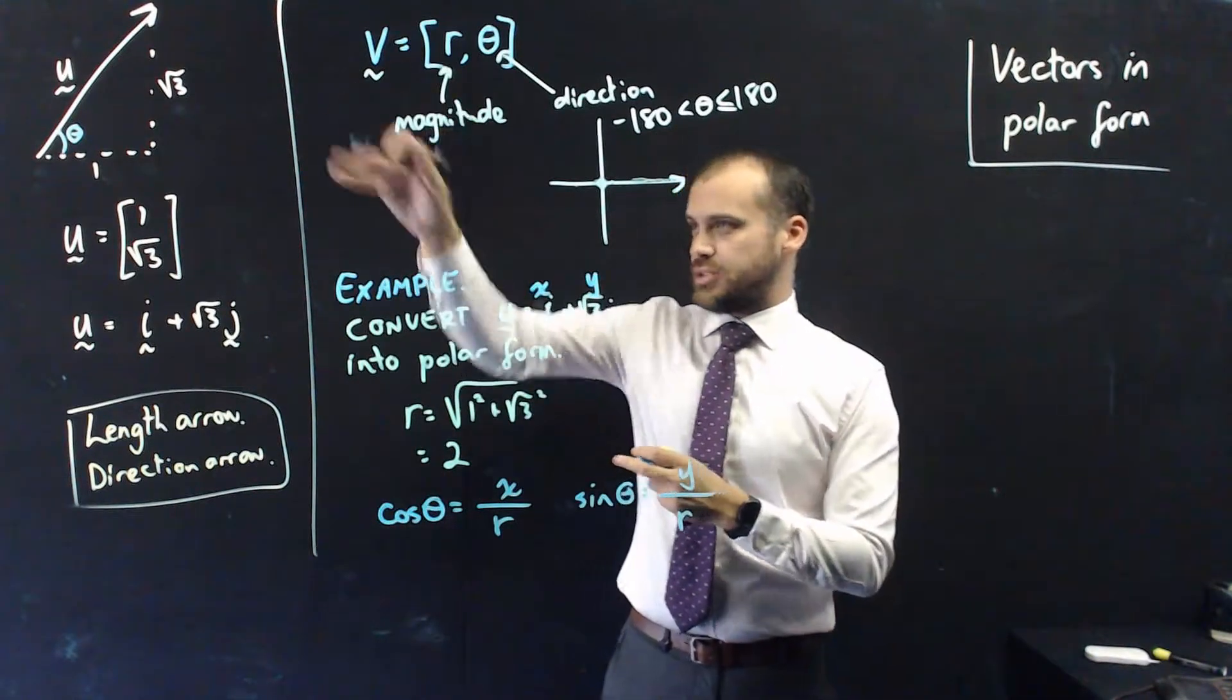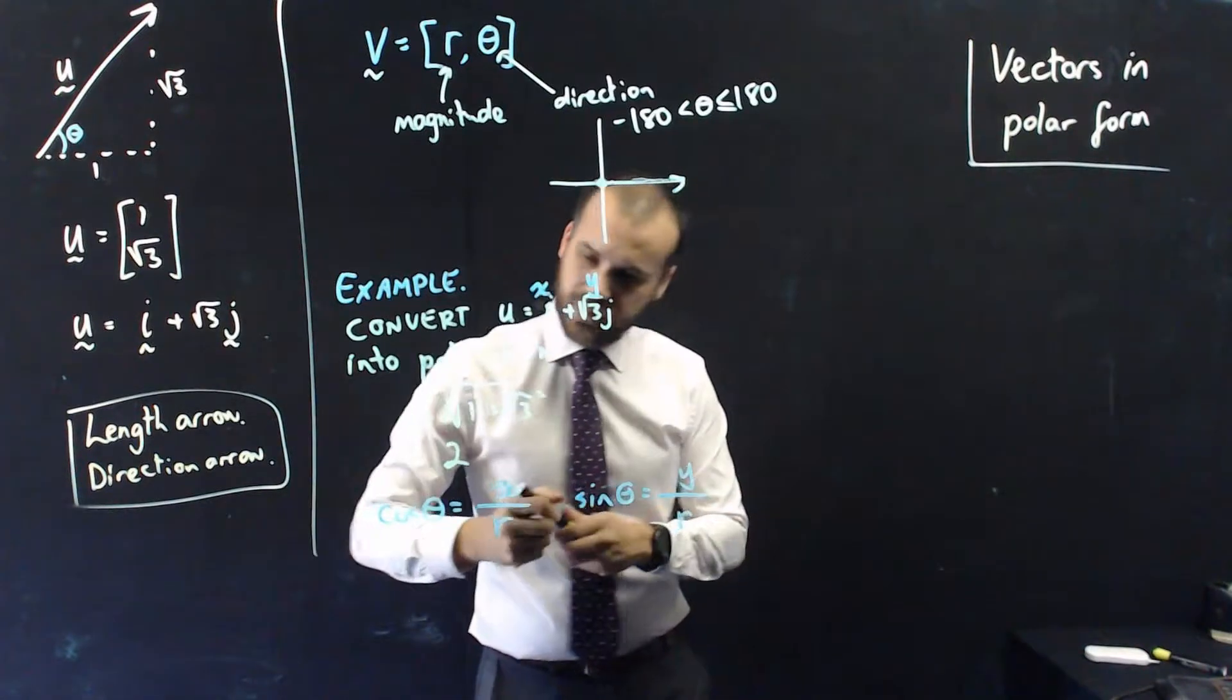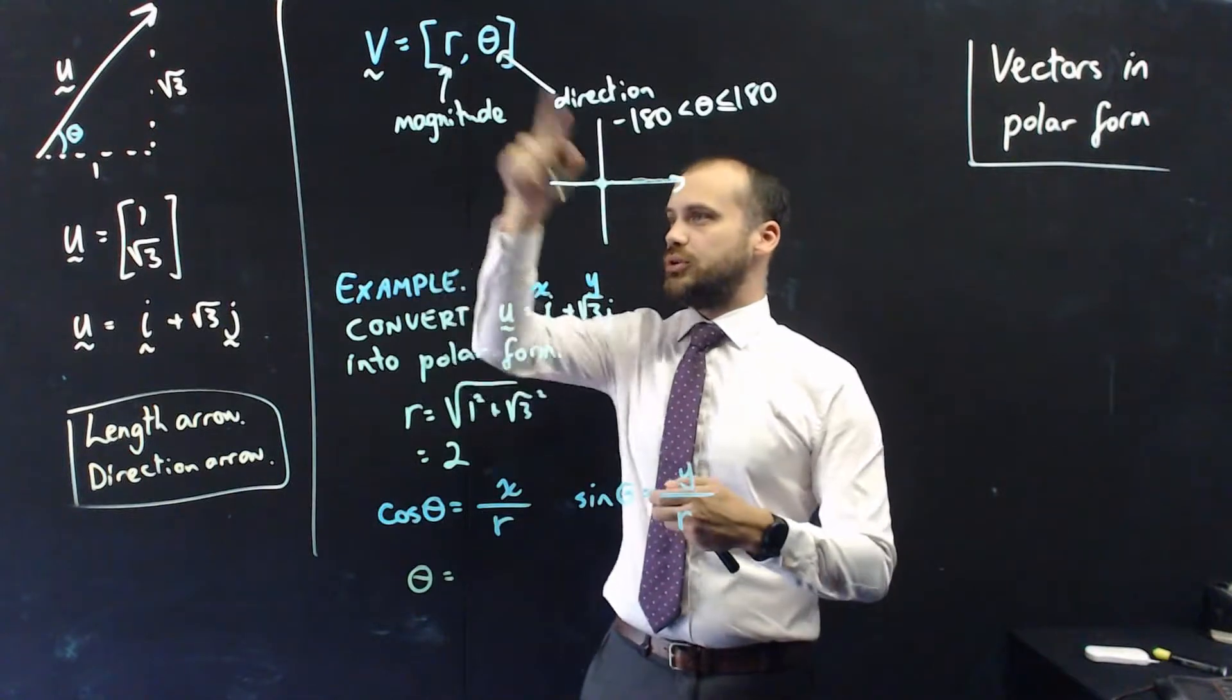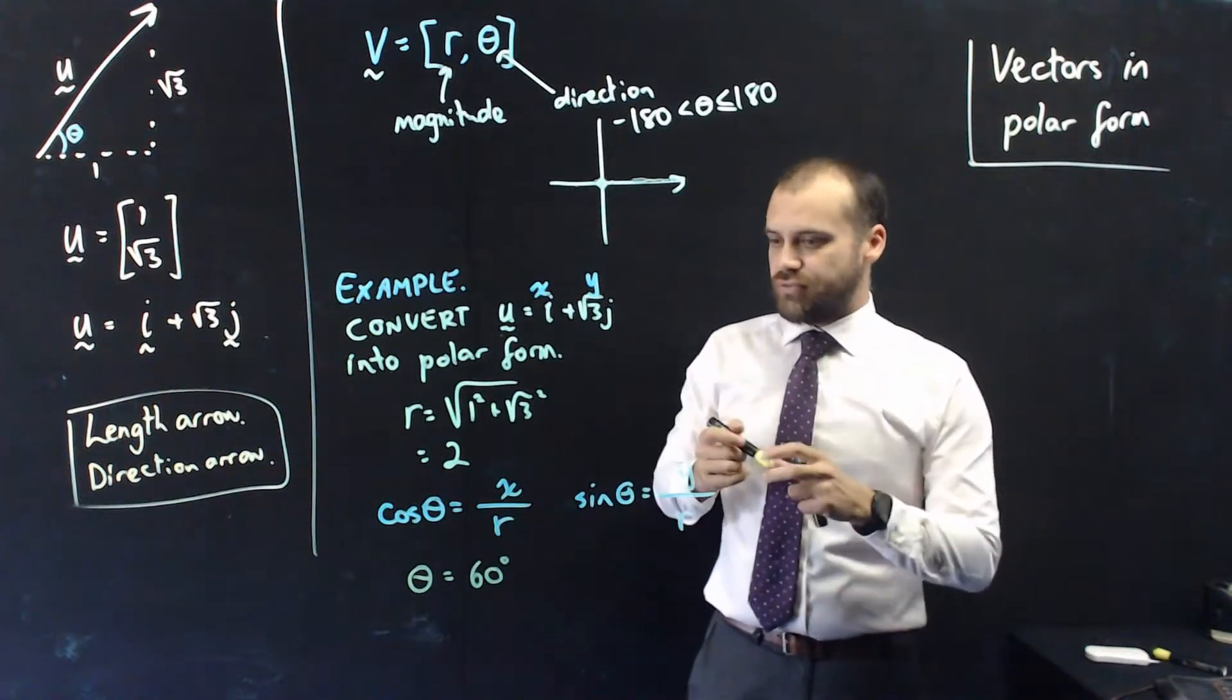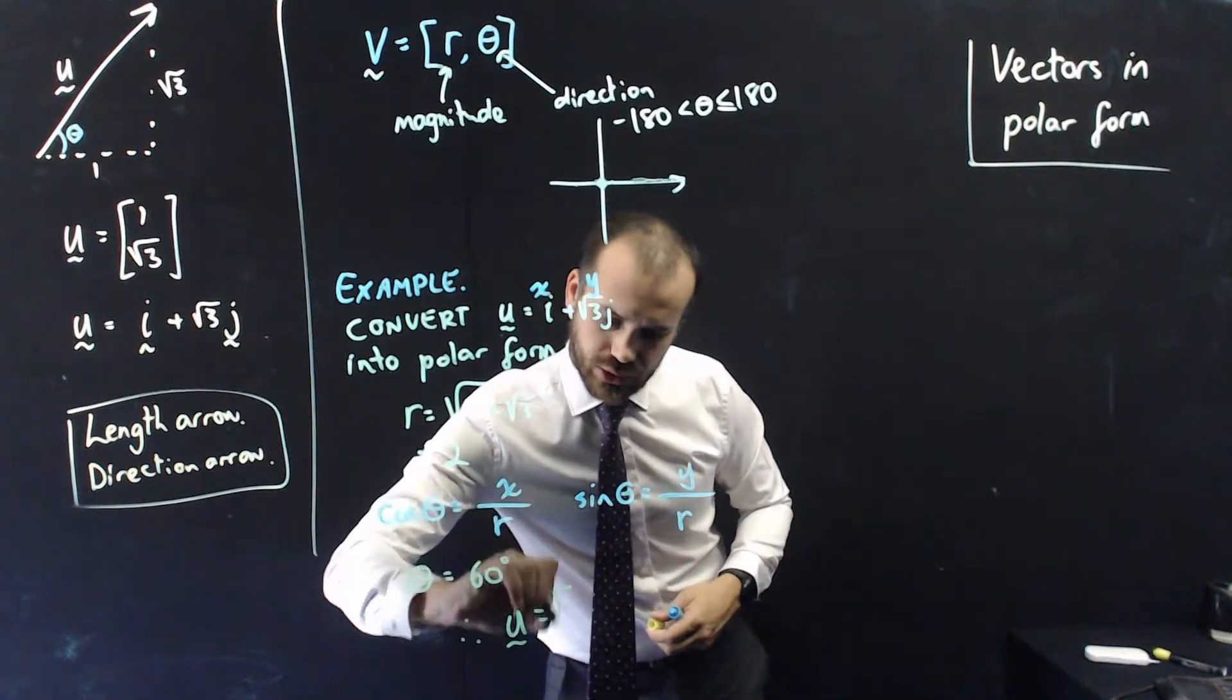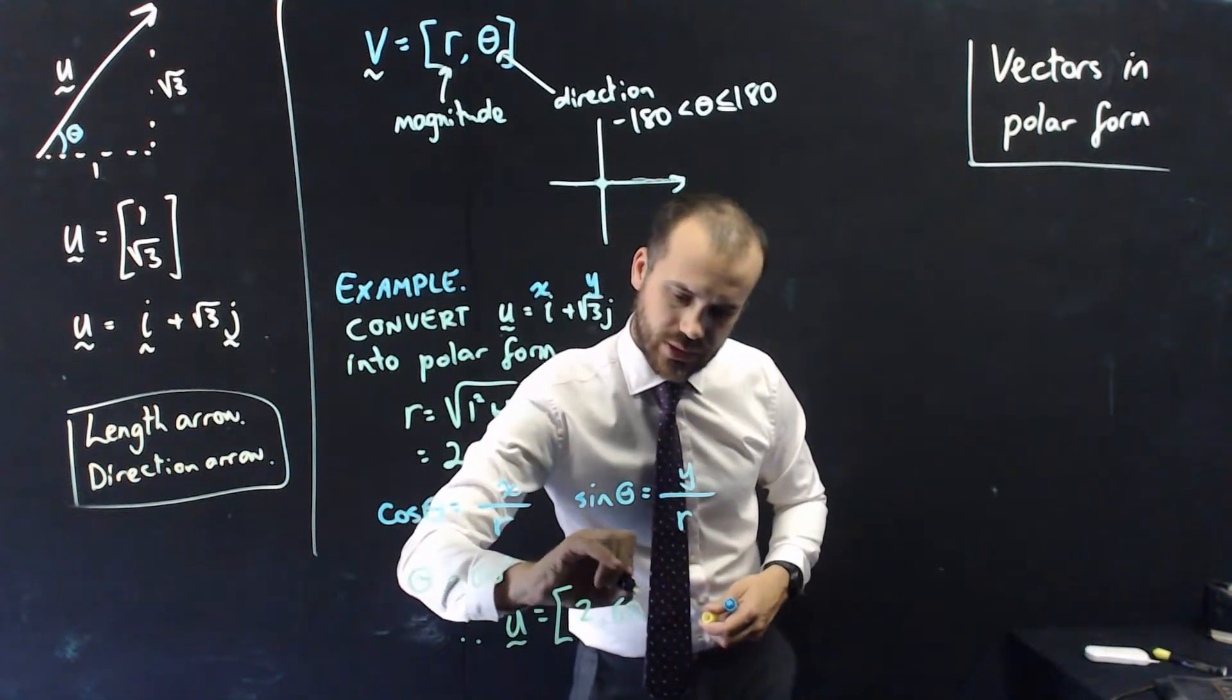that's a standard triangle, so I can do that really quickly. I can tell you that in this particular example, theta is equal to 60 degrees. So, my final answer here is that the vector u, therefore, the vector u is equal to 2 comma 60.